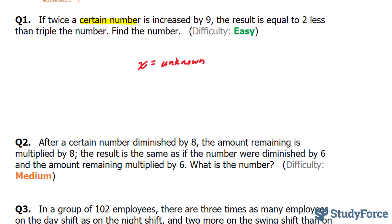If twice a certain number, so the word twice suggests that we will be multiplying this number by two, is increased by nine. So 2x plus nine. Increase suggests adding nine. The result is equal, and they tell us that this is equal to